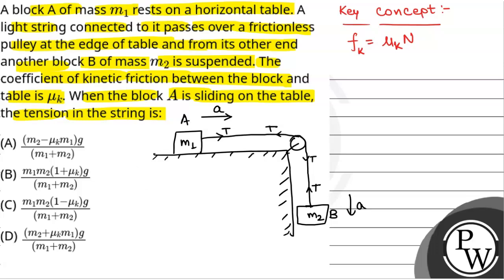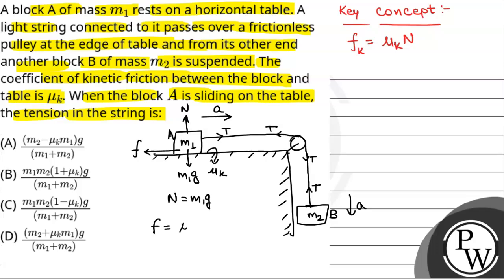Now we will see the forces acting on block A. There will be a frictional force acting opposite to the direction of motion of M1. The weight of block A acts downward as M1·g, and the normal reaction due to the table acts upward as N. So N equals M1·g, and therefore the frictional force equals mu k into M1·g.